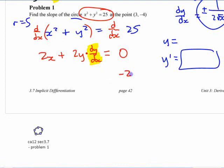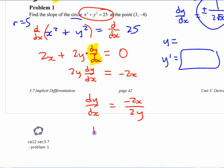You're forced to write negative 2x over here equals 2y dy/dx and then dy/dx equals negative 2x over 2y and then dy/dx equals negative x over y.